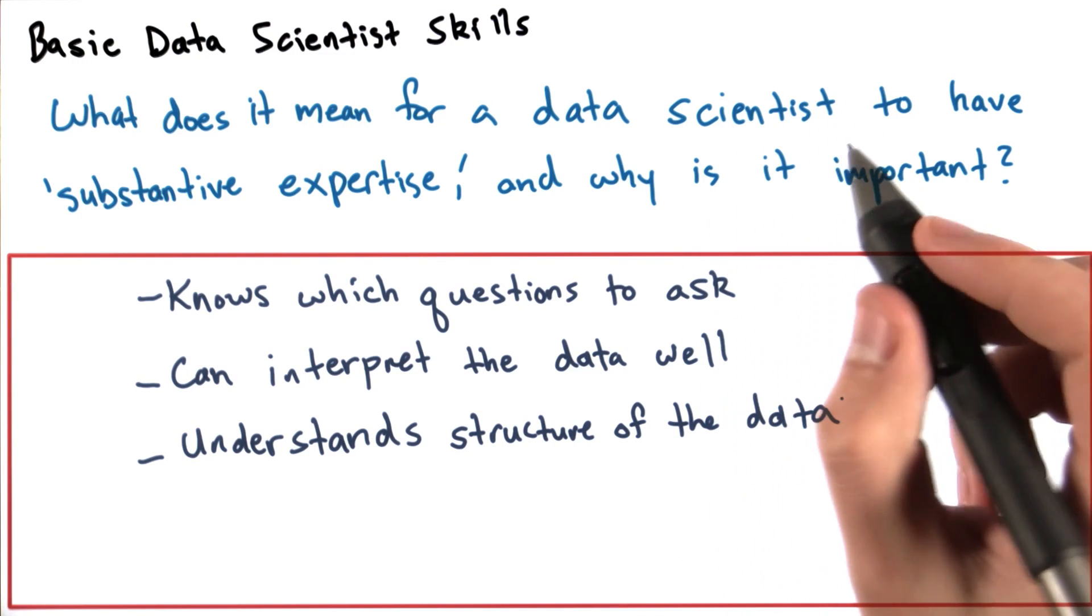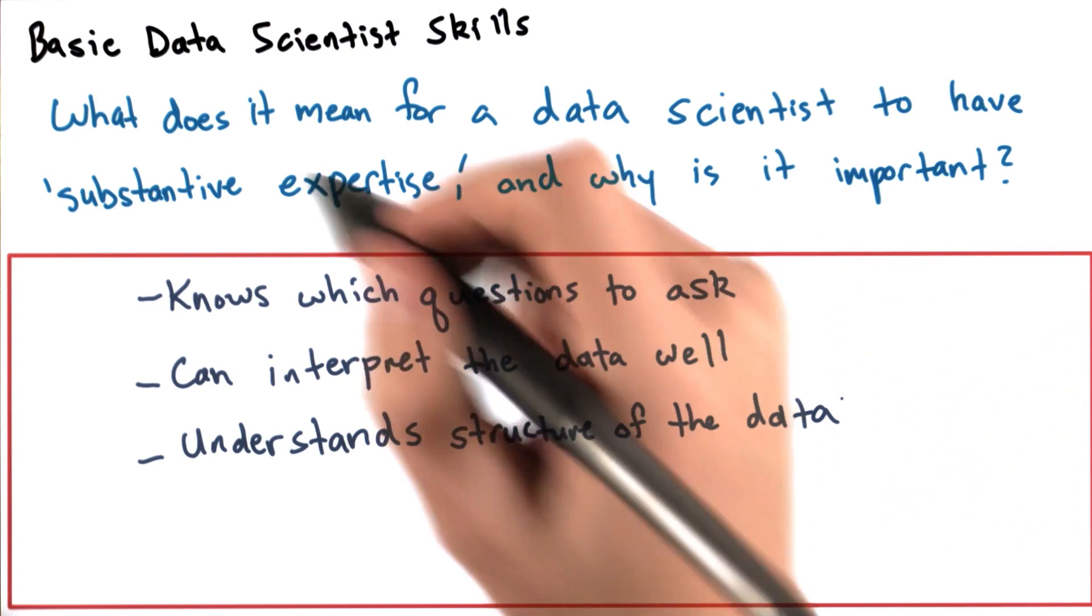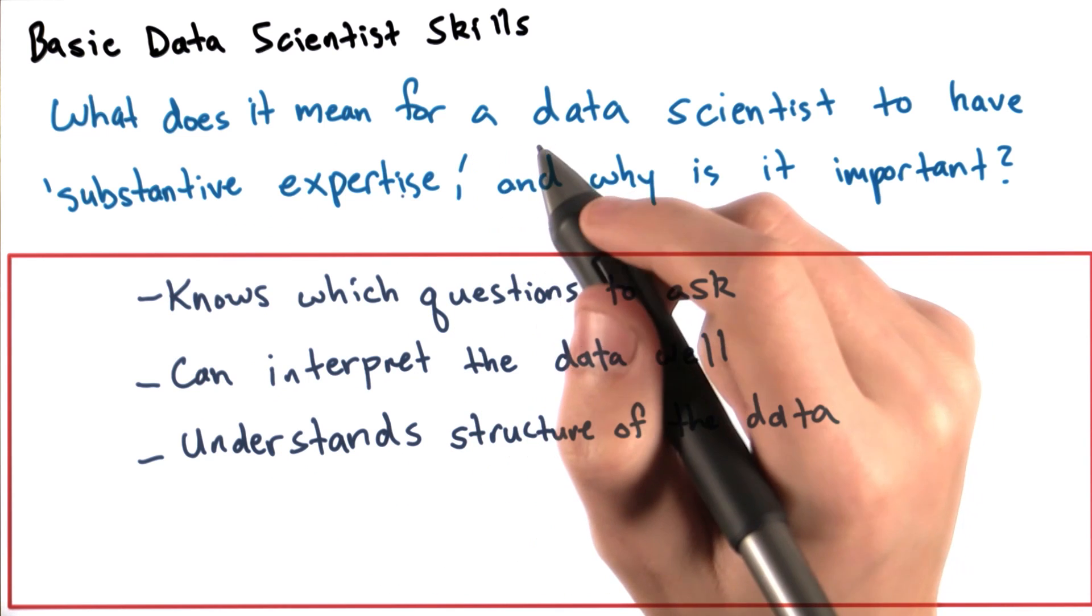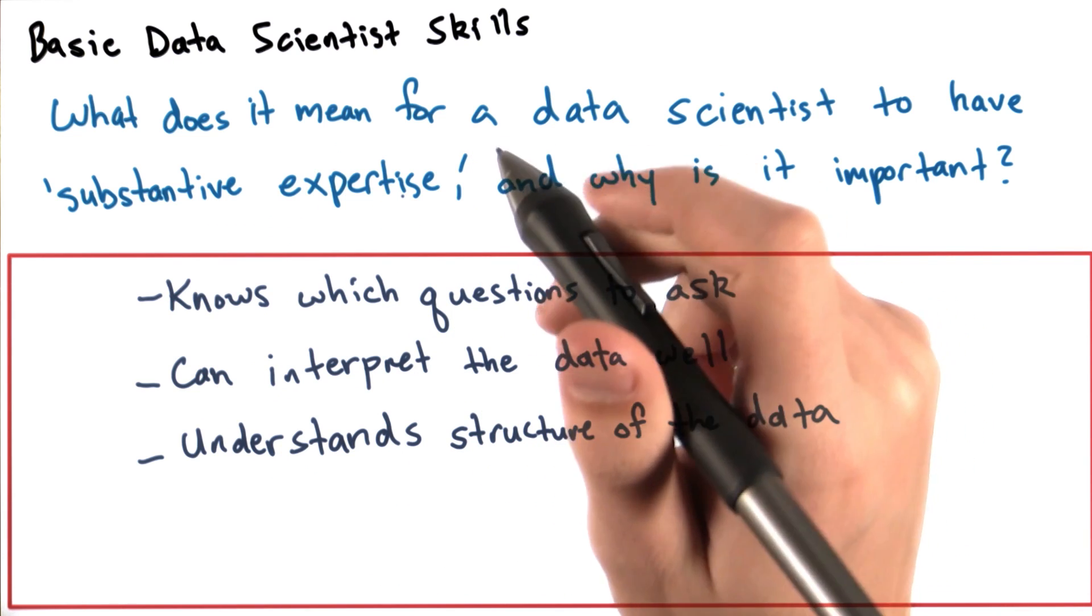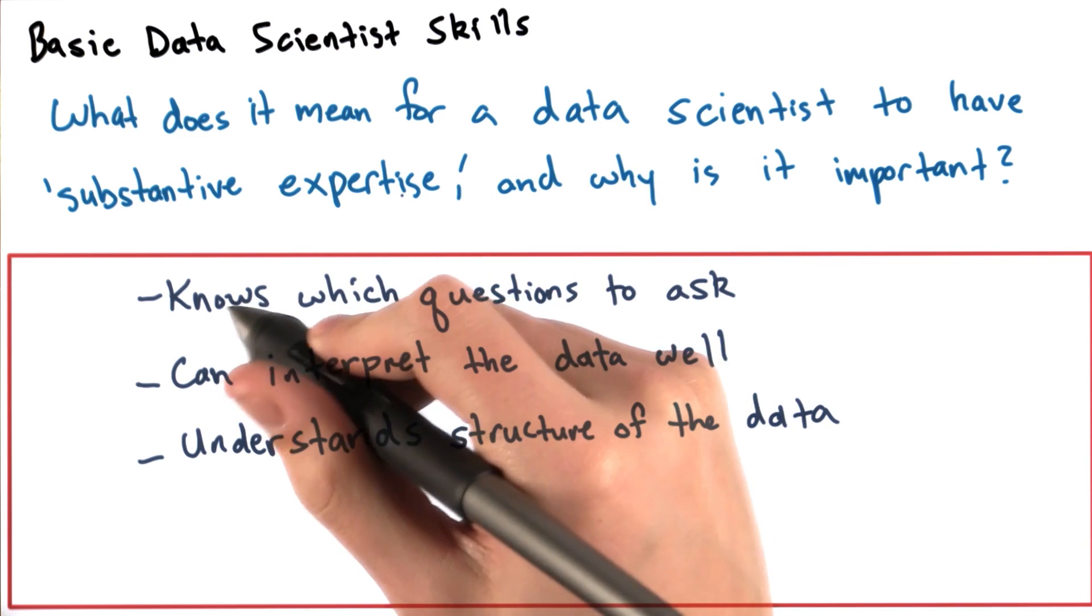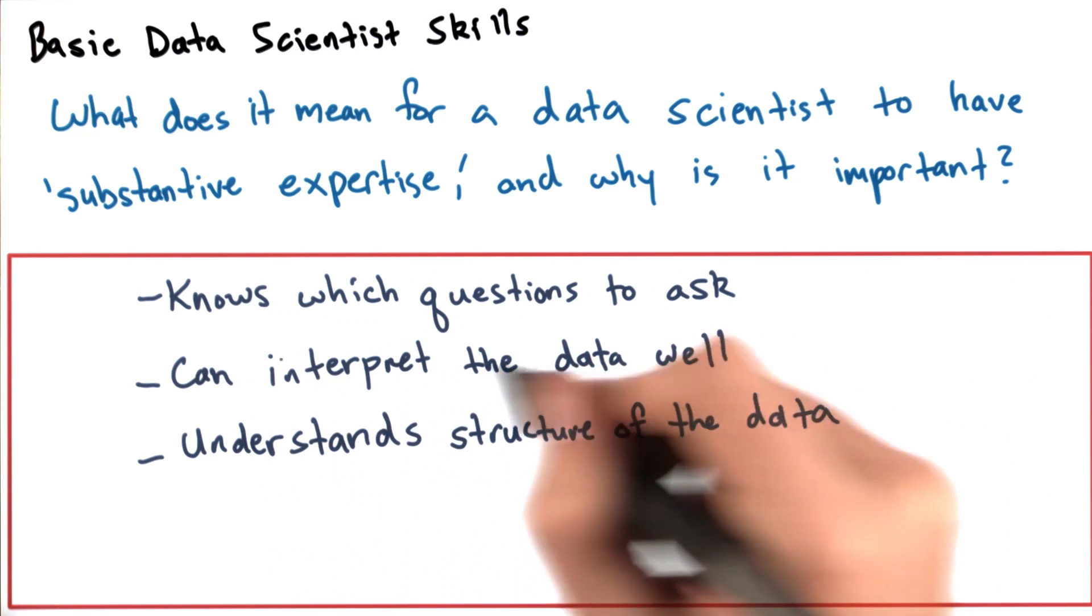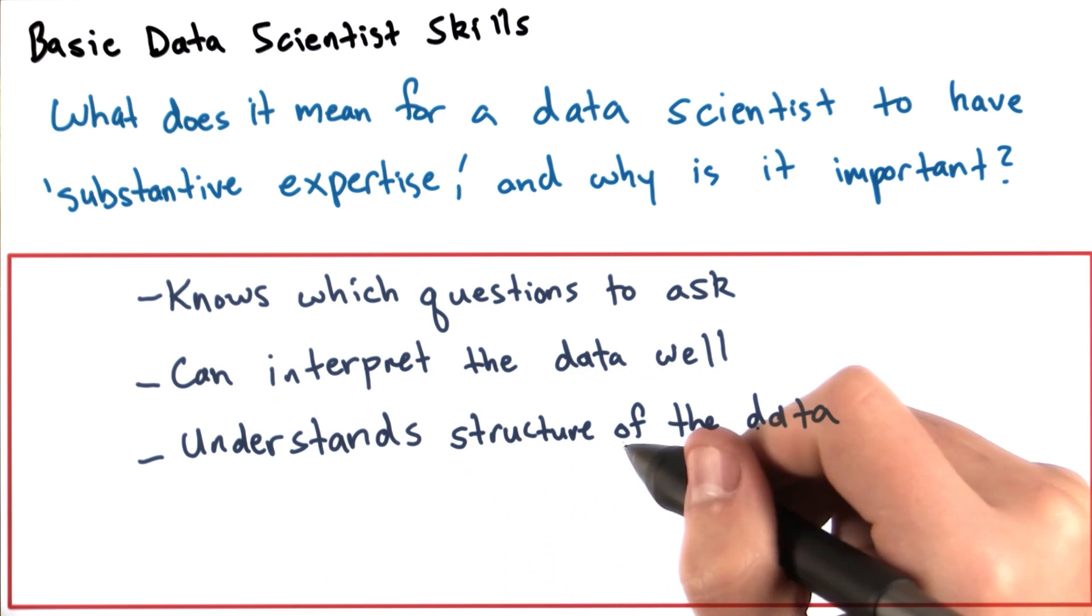As we discussed earlier in this lesson, a data scientist needs to have substantive expertise. What does that mean? Well, typically it means that a data scientist knows which questions to ask, can interpret the data well, and understands the structure of the data.